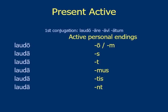Remember that if it's a- plus -o, it would be laudao, and that sounds terrible to the Romans. So they decided to drop the -a and just put the -o, giving us laudo. For all the others you just add the endings: laudas, laudat, laudamus, laudatis, laudant. That's the present active.